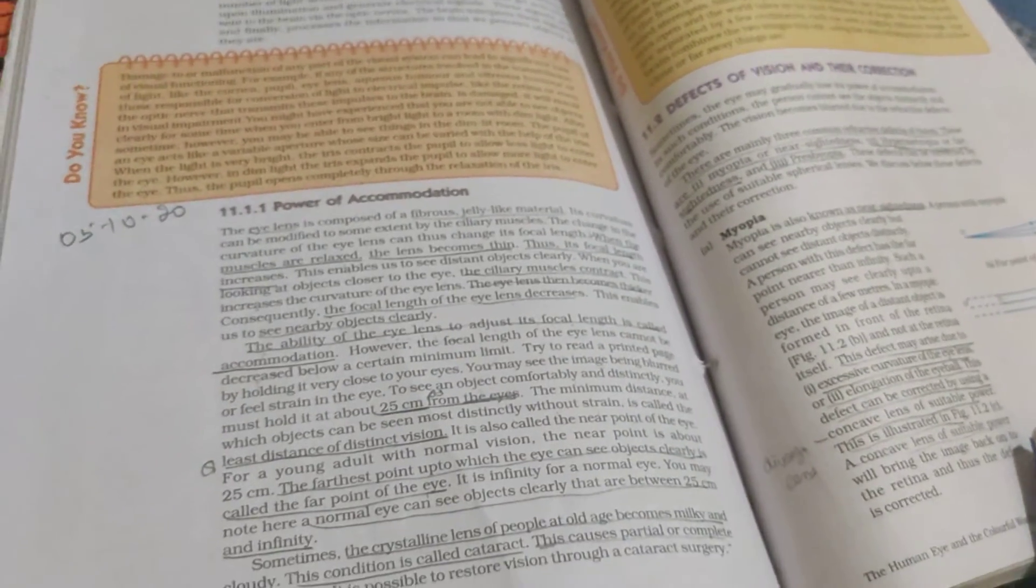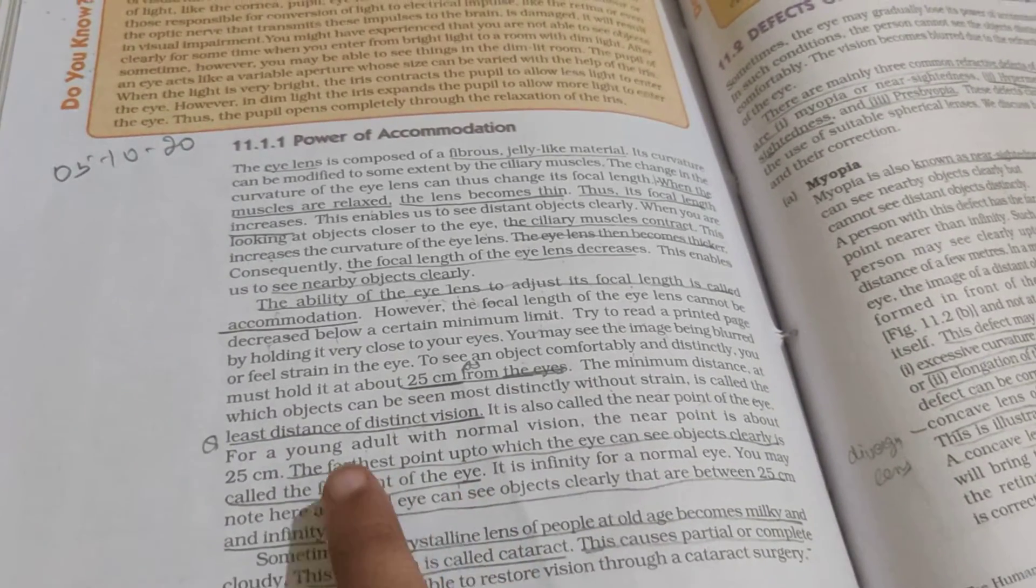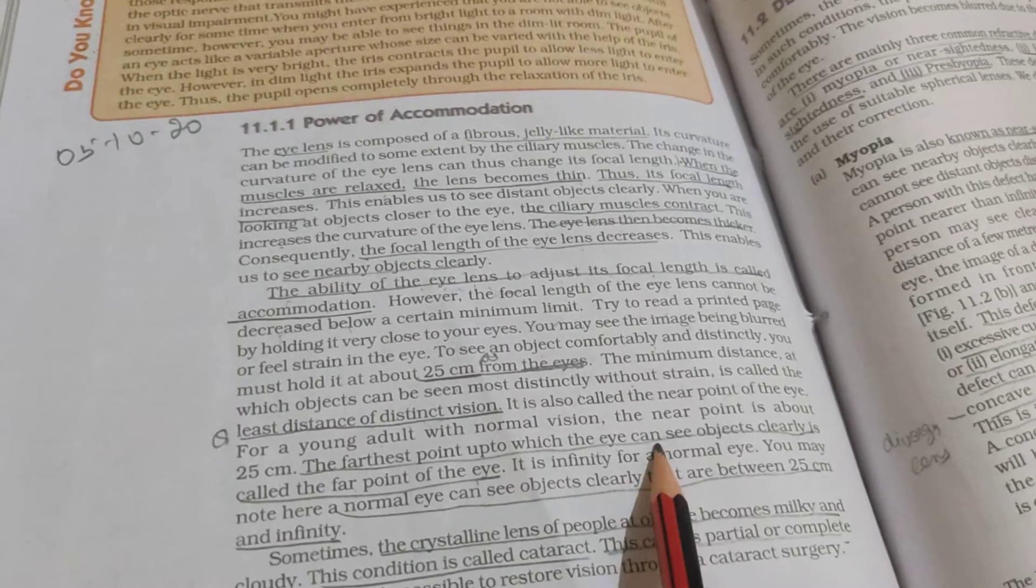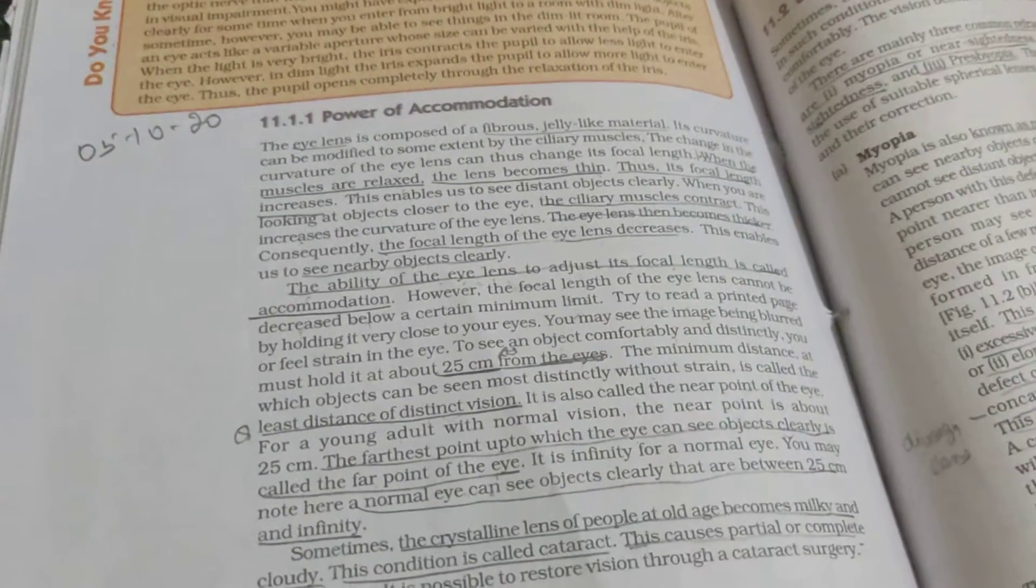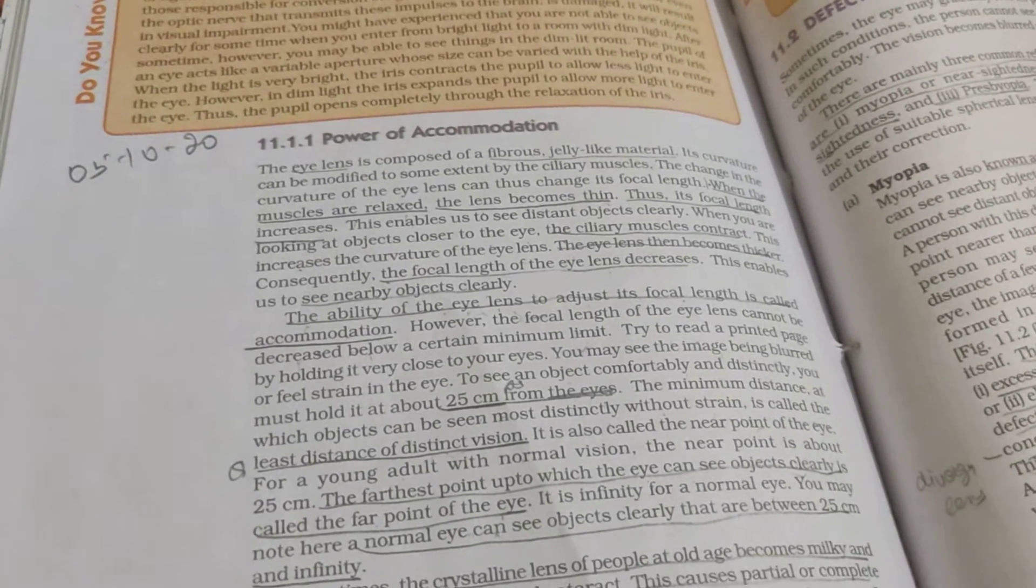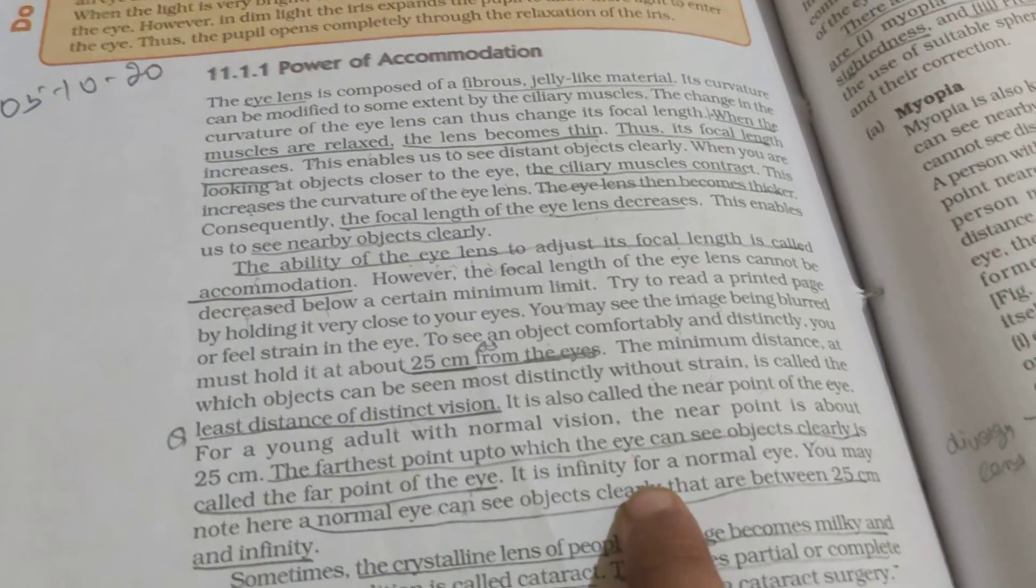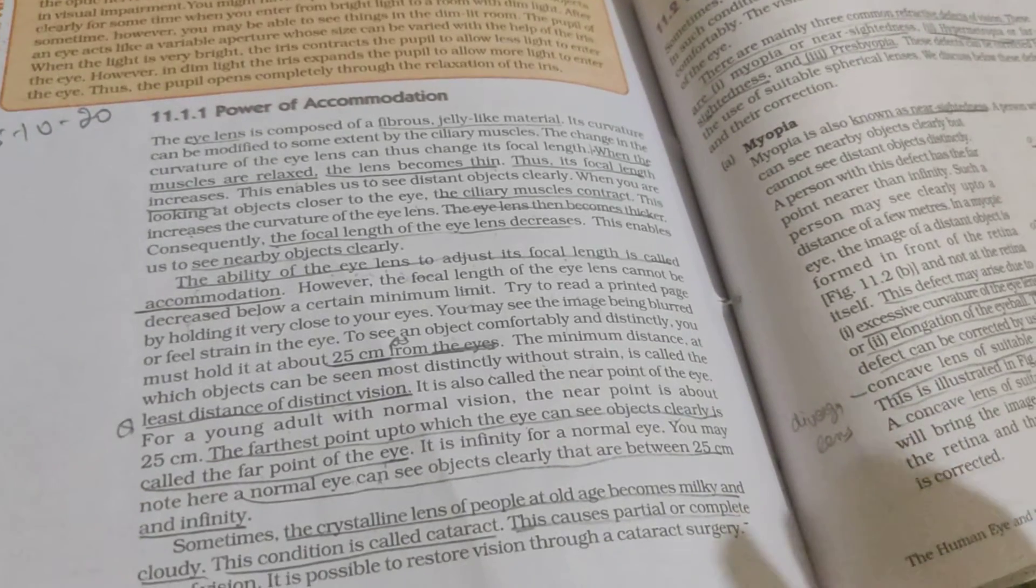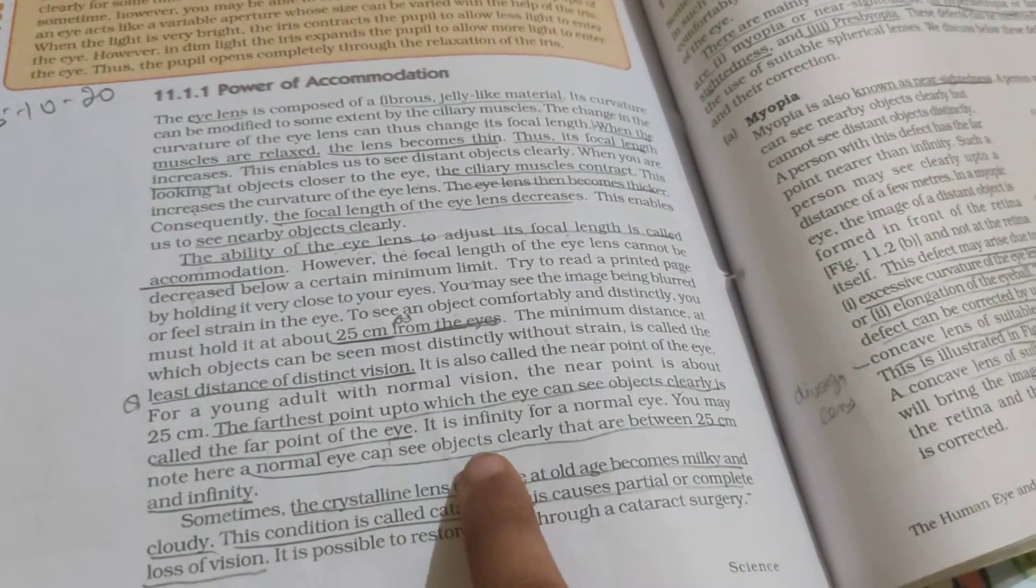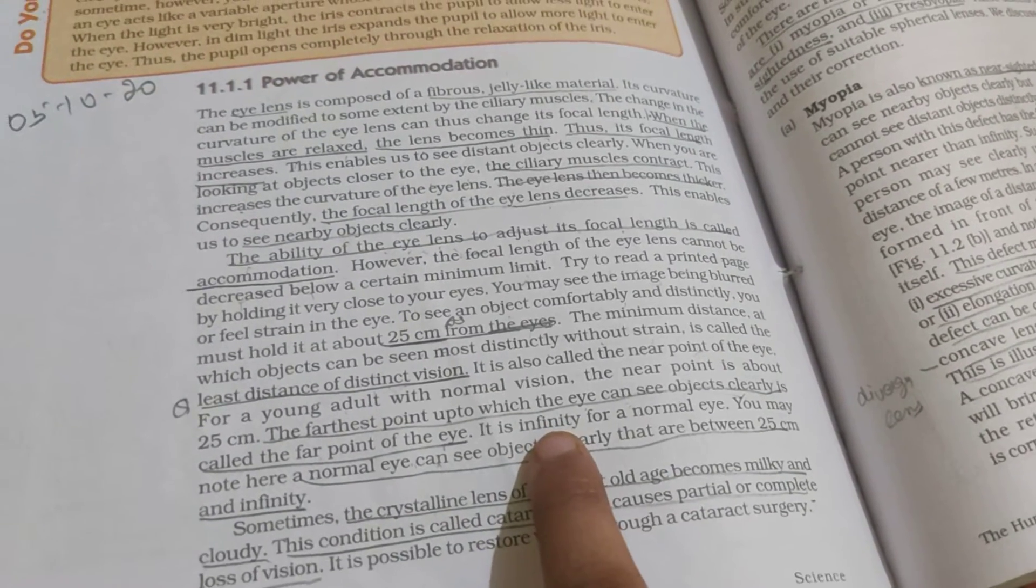The farthest point up to which the eye can see objects clearly is called the far point of the eye. What is the far point? It is infinity. The answer is infinity.